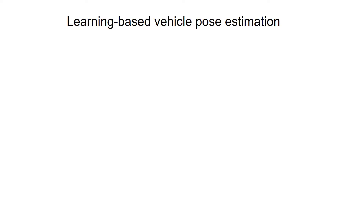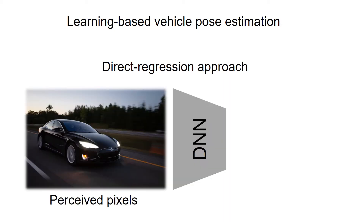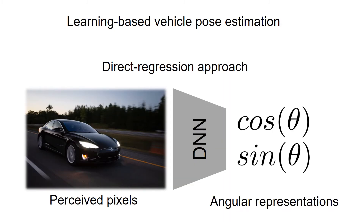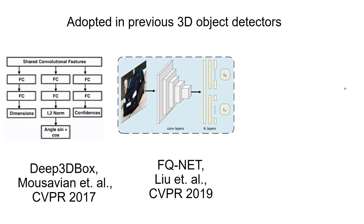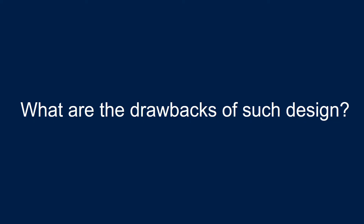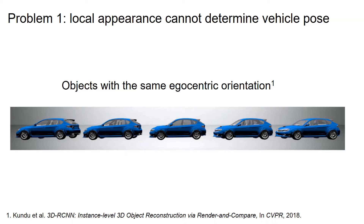Recent works on vehicle pose estimation usually adopt a direct regression approach, where a deep neural network approximates a function that maps pixels to pose vectors. Many 3D object detectors such as Deep3DBox, FQNet, and DSGN have adopted this approach. Are there any limitations of this straightforward design? Firstly, learning the mapping from local appearance to vehicle pose in the camera coordinate system is an ill-posed problem. Vehicles with the same pose can look differently depending on their locations, and vehicles that look similar can have different poses.